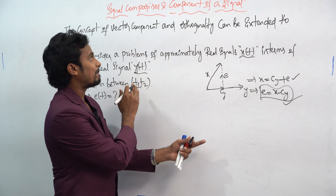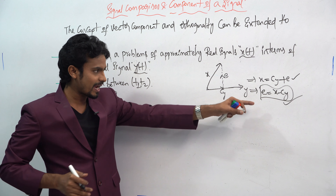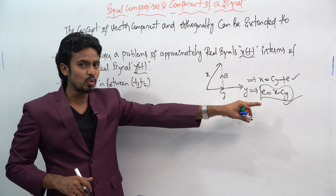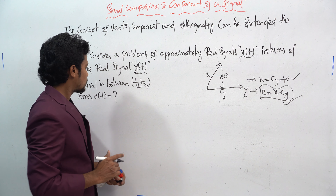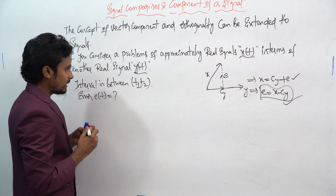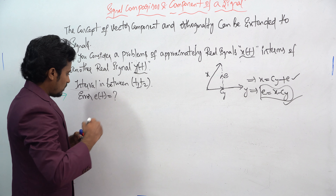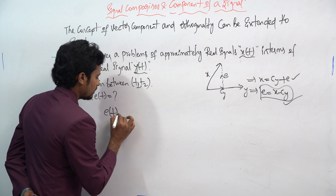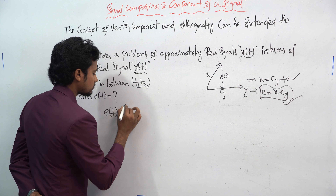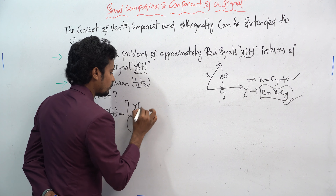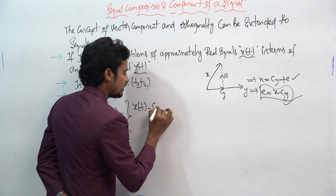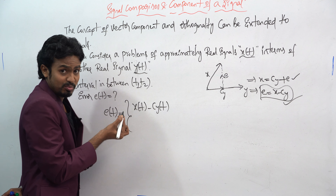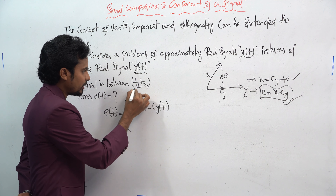So in this signal comparison as well as the component of a signal, we have to find the error e = x − c·y. If we apply this, e(t) = x(t) − c·y(t), considering the interval between t1 and t2.